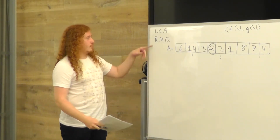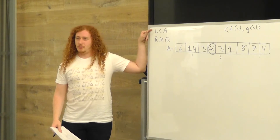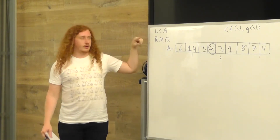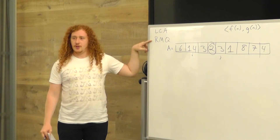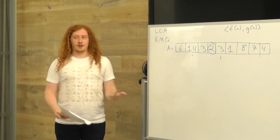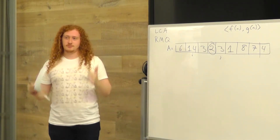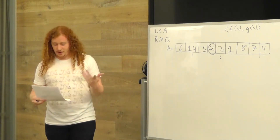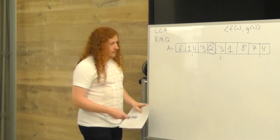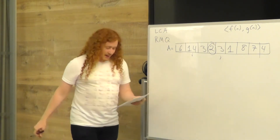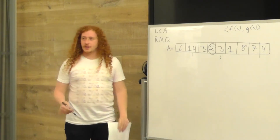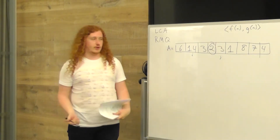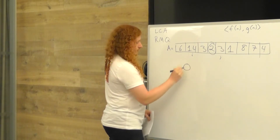Why am I talking about this? It turns out we can take an LCA problem and turn it into a range minimum query problem. This is a really cool technique called reduction. If you haven't seen this before — good, because it's awesome and you should learn about it. The way we're going to do this is by constructing what's called an Euler Tour, which is kind of like a depth first search.